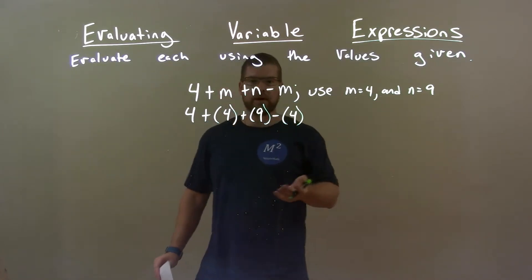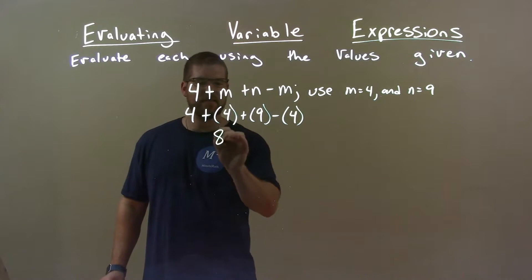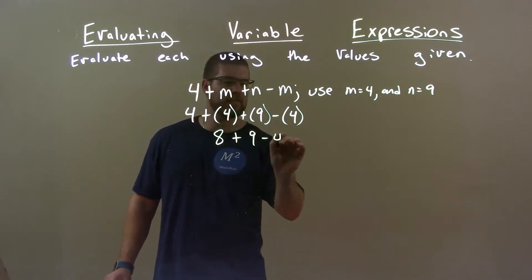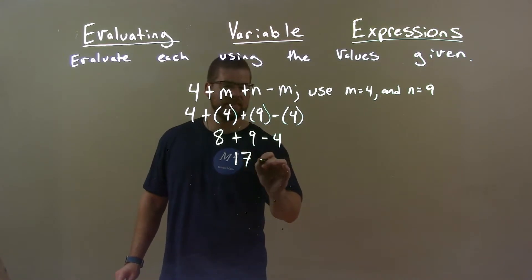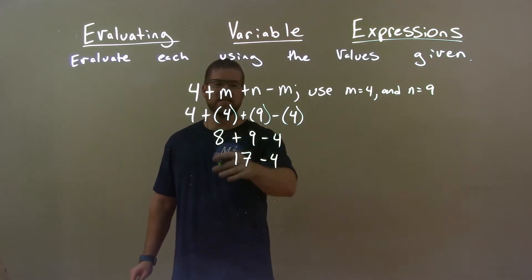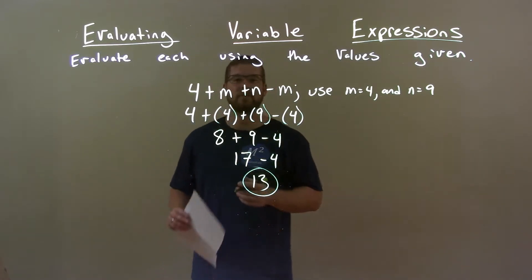So now we just simplify left to right. 4 plus 4 is 8 plus 9 minus 4. 8 plus 9 is 17 minus 4. 17 minus 4 is 13. So final answer here is just 13.